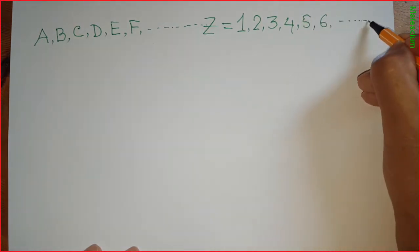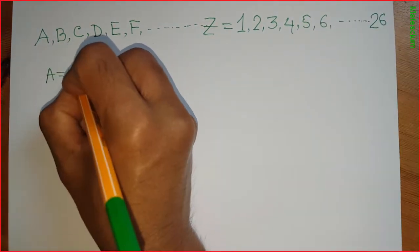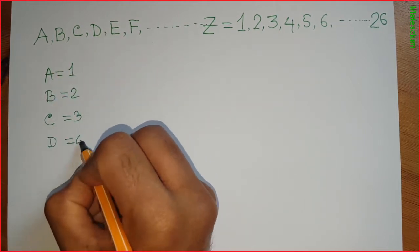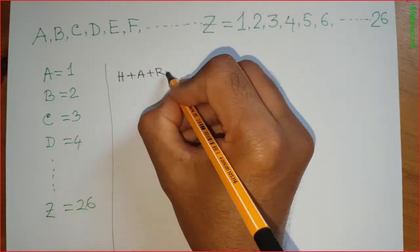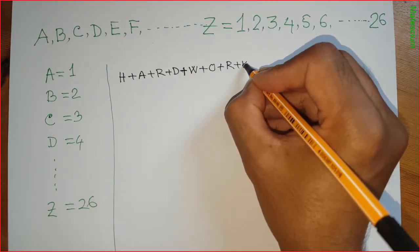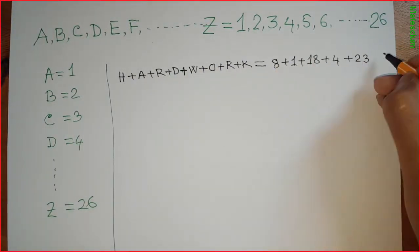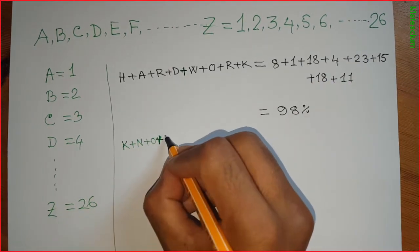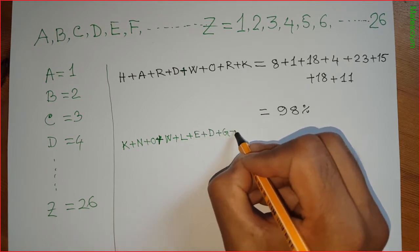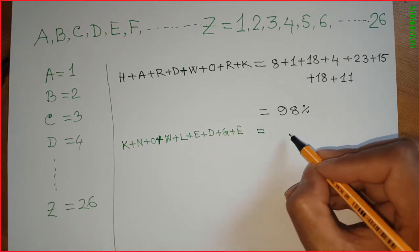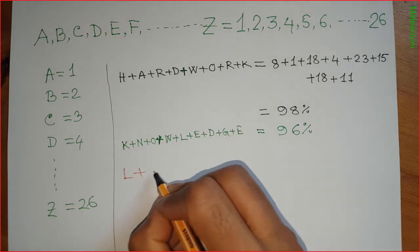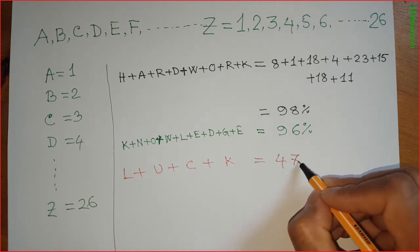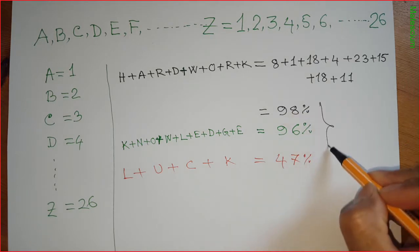That means A is 1, B is 2, C is 3, and so on. In this way, if we place the values for hard work, it is a total of 98 percent. In the same way, if we calculate the value of knowledge, it will give you 96 percent success. And what if we depend on luck? Your luck may give you only 47 percent of success. That means none of them can give you 100 percent success.